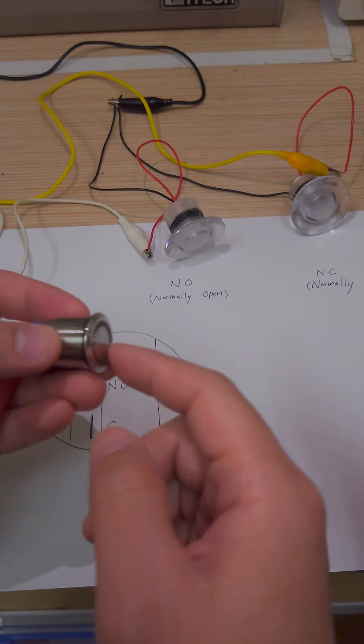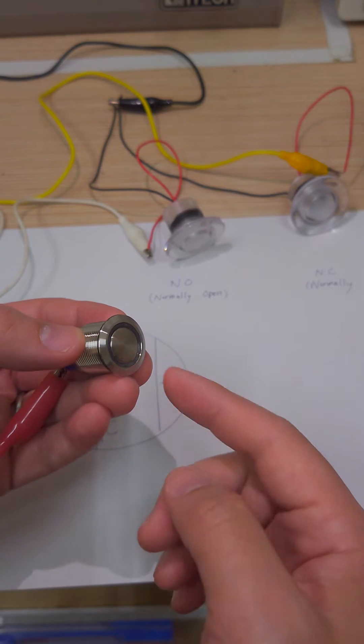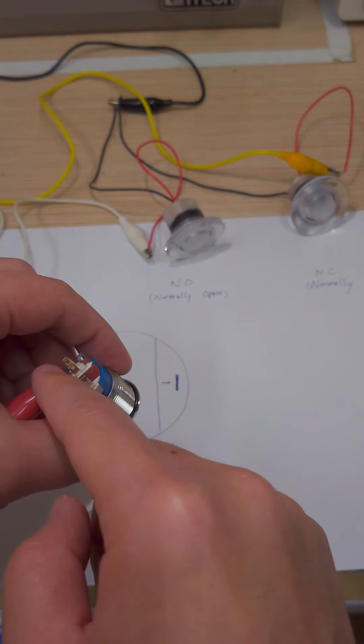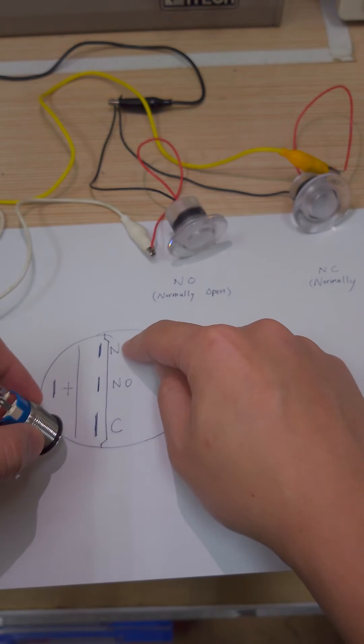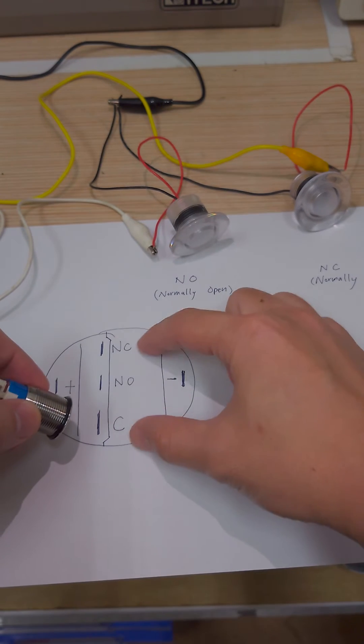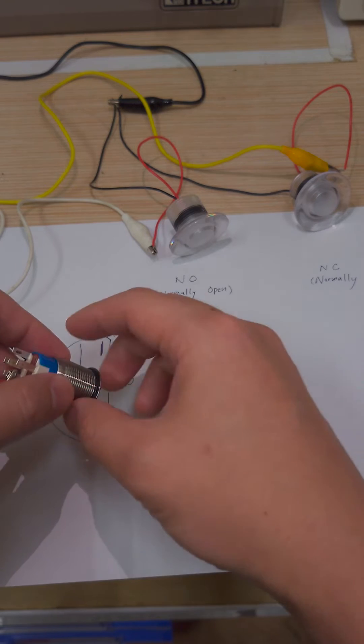Normally means when the switch is not pressed. When the switch is not pressed, the NO terminal will be open. When the switch is not pressed, the NC terminal will be closed, connecting COM to NC.